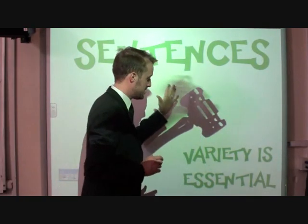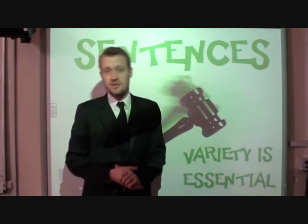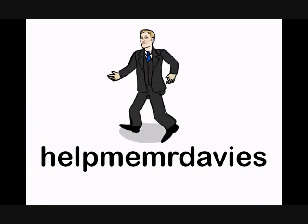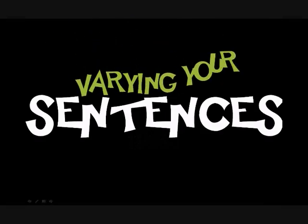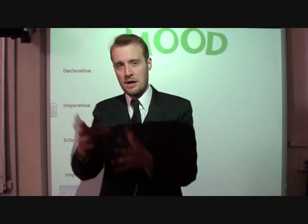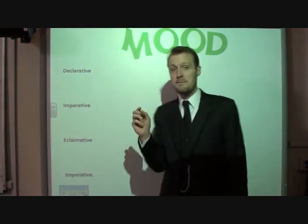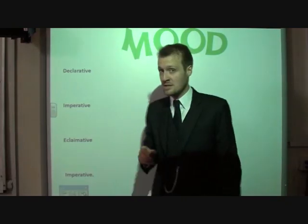The key to doing well with your sentences is variety — using lots of different kinds of sentences. Sentences generally vary by length and by mood. Length is easy enough: is it a small sentence or a long sentence? But the mood of a sentence is basically the type of sentence that it is. There are four main types of sentences.